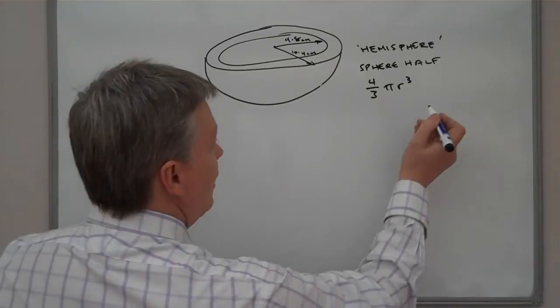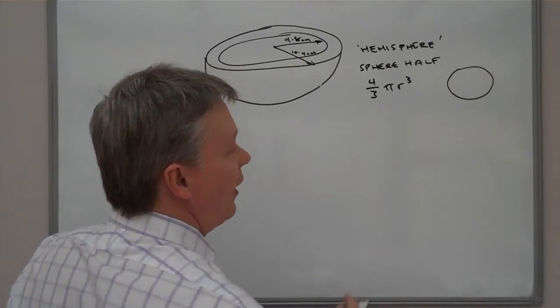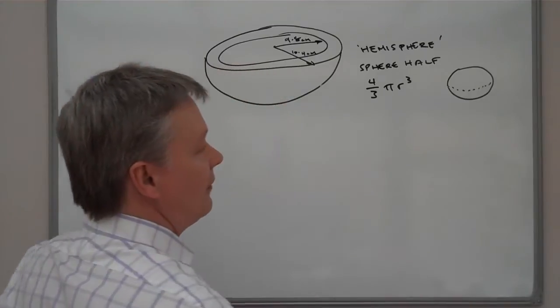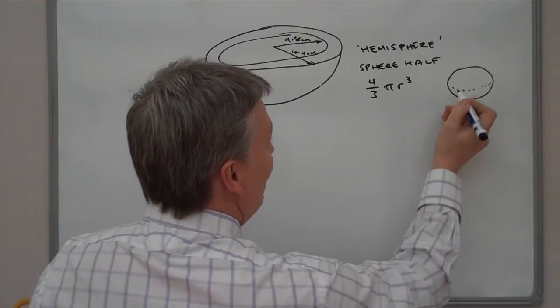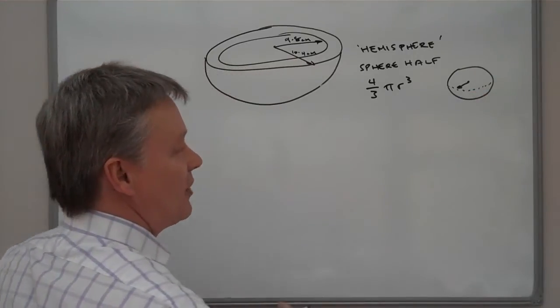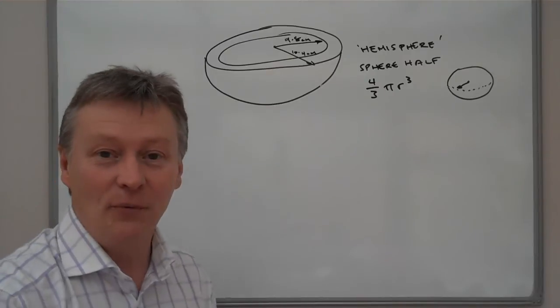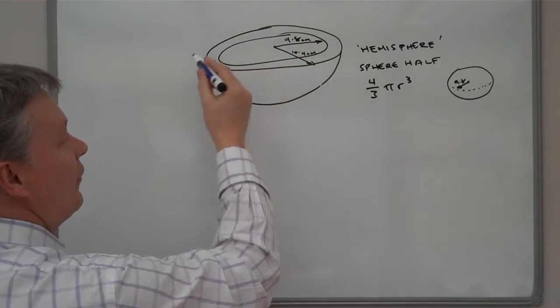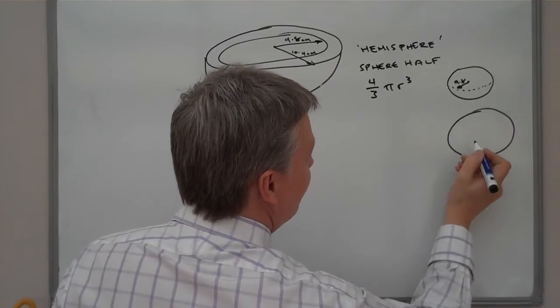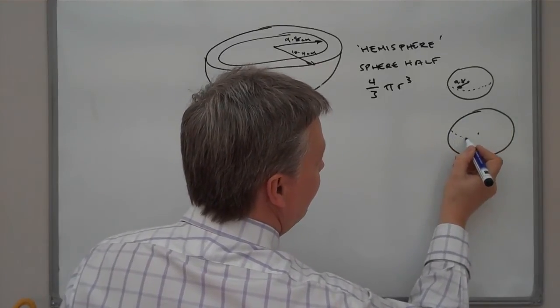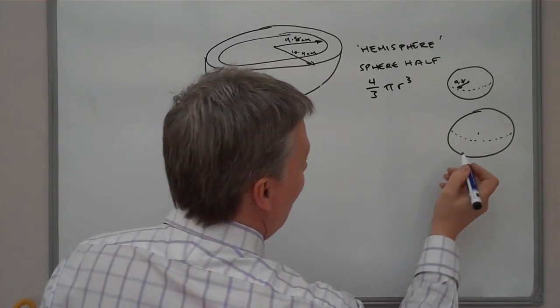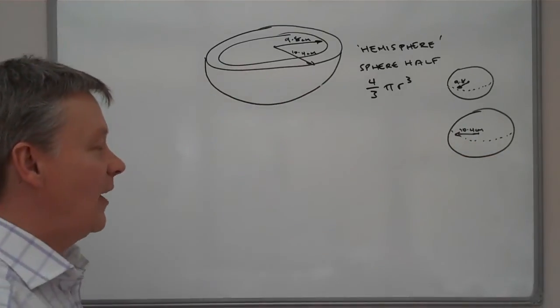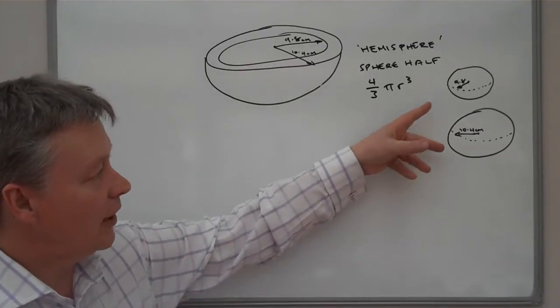So what we're going to do is effectively we're going to look at this problem as being initially two spheres. So one of the spheres will have a, I can't draw a sphere, but if you can imagine a football. That particular sphere is the first one, which is the smallest one, which is 9.8 centimeters radius. And then the bigger sphere is this one here, and that's got a radius of 10.4 centimeters.